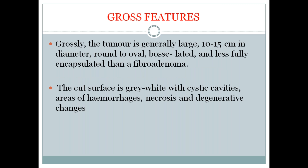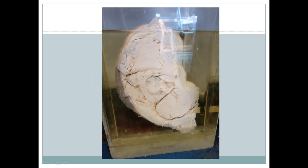Coming to gross features: grossly, the tumor is generally large, 10 to 15 centimeters in diameter, round to oval, has a bosselated appearance, and is less fully encapsulated than a fibroadenoma. This leaf-like bosselated appearance is seen grossly. On cut surface, it is gray-white with cystic cavities, areas of hemorrhage, necrosis, and degenerative changes. This is the gross specimen we have.